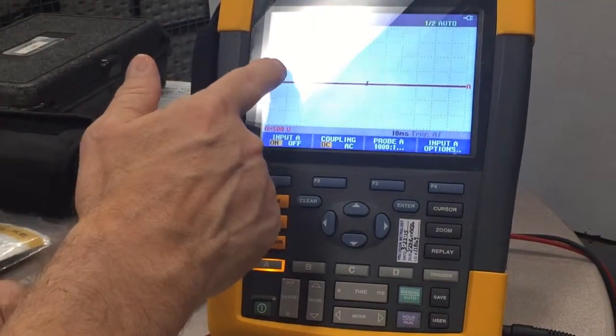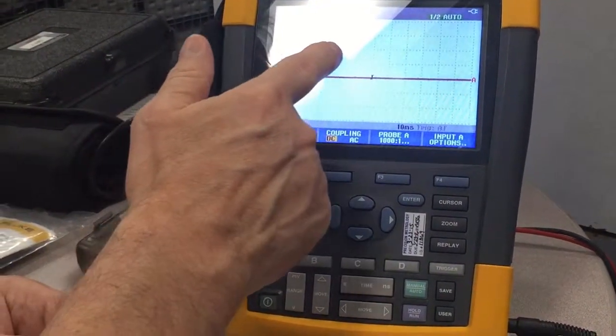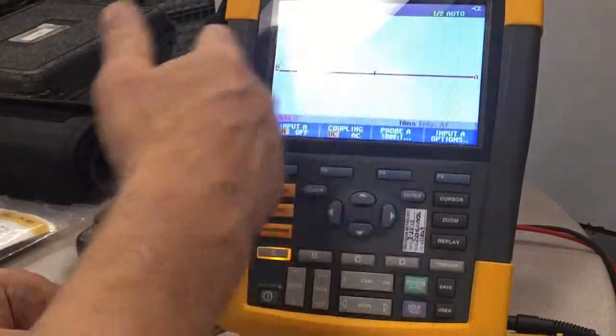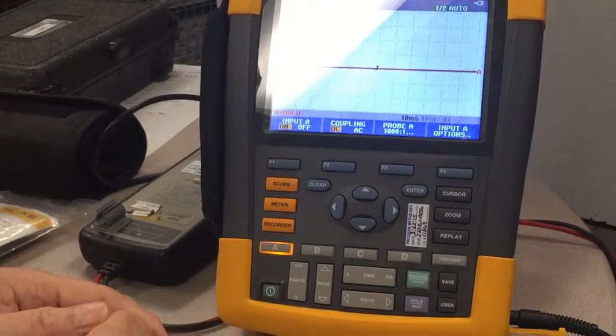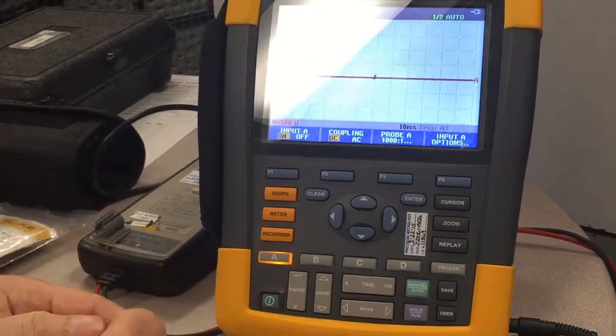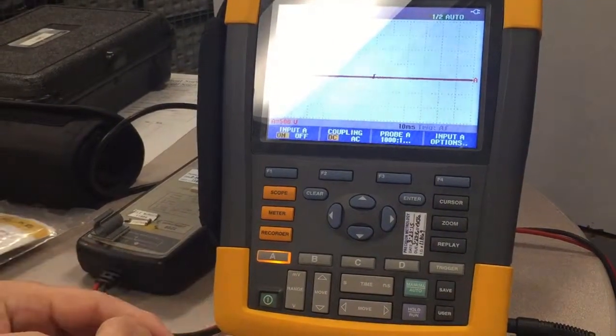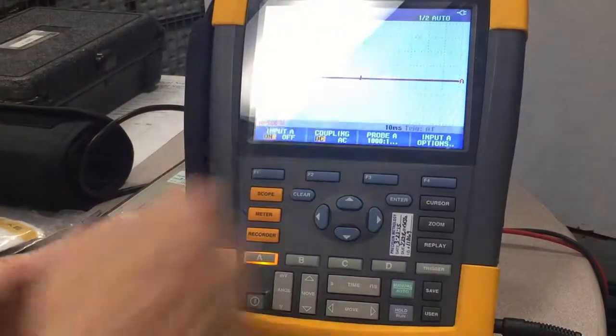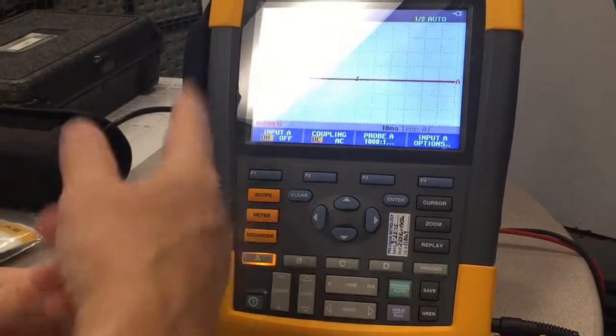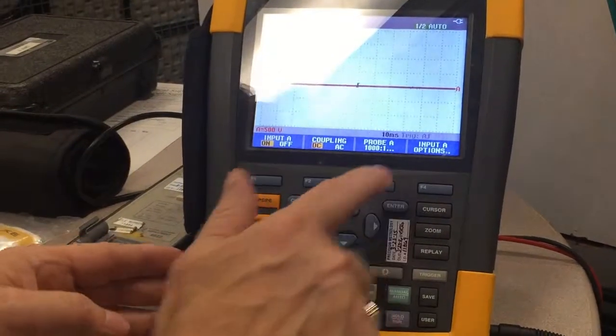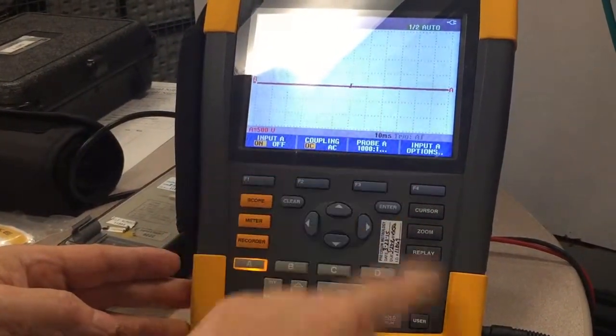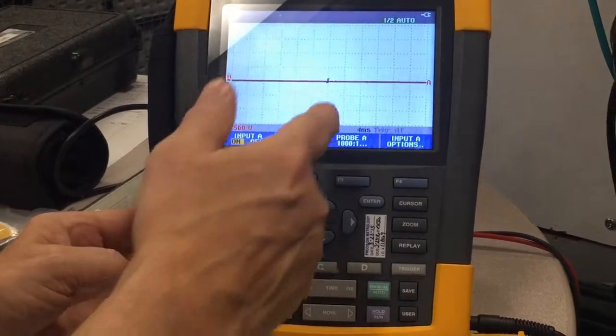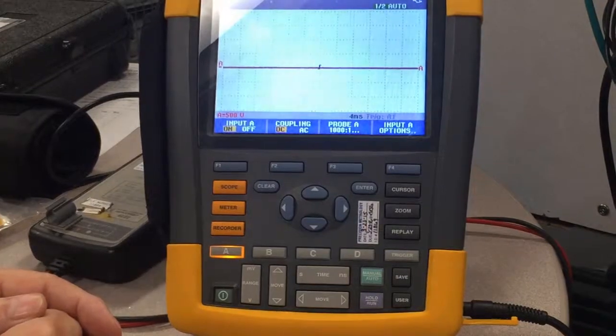There are 12 graticules across. So, if I want to look at about 36 milliseconds of time across the whole screen, I need this set to about 4 milliseconds per division. Right now, it's set for 10 milliseconds. I'm going to change my time setting to 4 milliseconds. Now, it's set for 4 milliseconds.